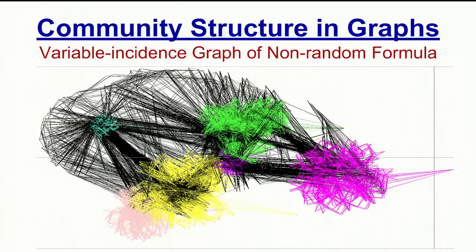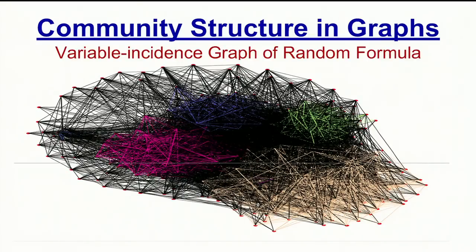This is an example of a non-random formula taken from the SAT 2013 competition. As you can see, the graph is highly separable into communities, which are represented with colored edges, and has relatively few inter-community edges, which are colored in black. If we compare this to the graph of a random formula, you can see it is much less separable and there are far more inter-community edges. We refer to this as a giant hairy mess.